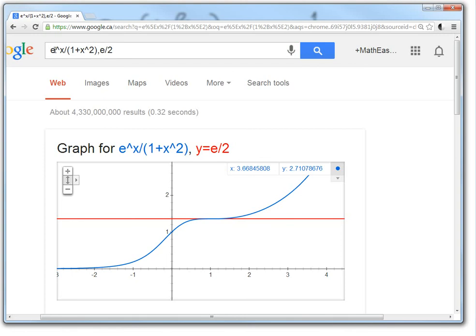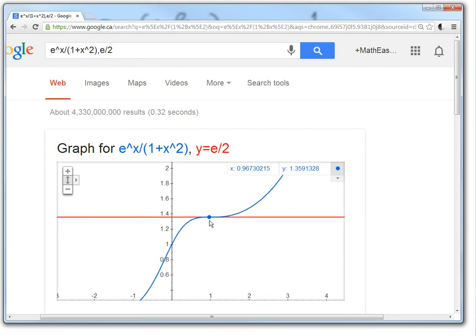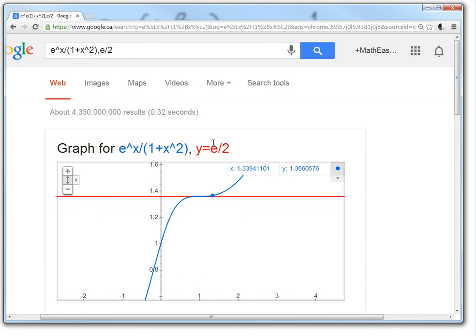Okay, so here I've graphed it with Google graphing calculator. Typed in e^x divided by 1 plus x squared, and then as well as the line e divided by 2. As you can see, the blue one is the curve we're trying to find the tangent line to, and then the red is the tangent line. So at the point 1, there's e over 2, somewhere over here, about 1.35. So when you zoom in, as you can see, it is perfectly tangent to it, and it's horizontal.